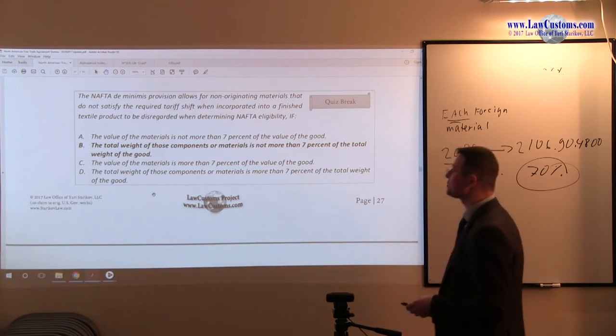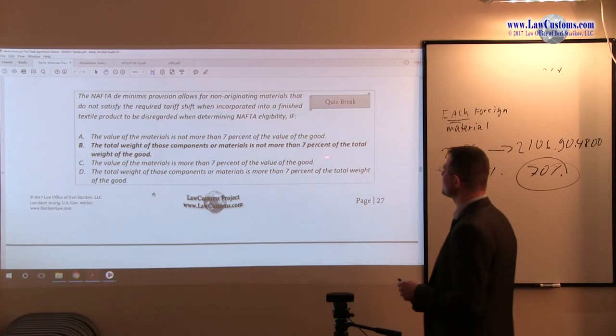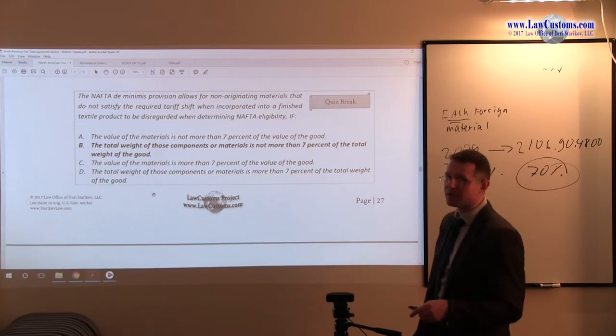B. The total weight of those components or materials is not more than 7% of the total weight of the good. Okay so we have a weight, we have a 7% rule, and we have a textile. This means B is the correct answer choice.